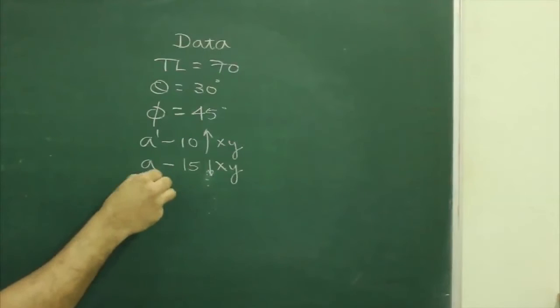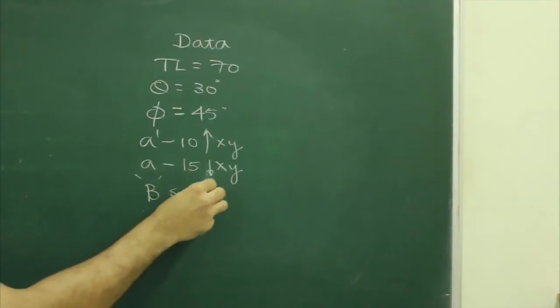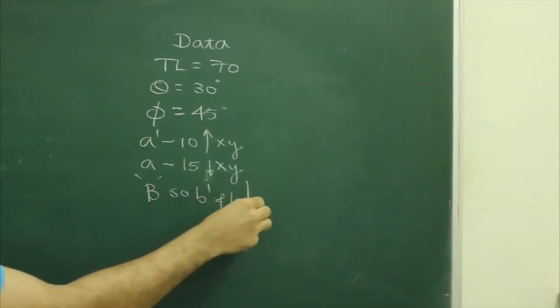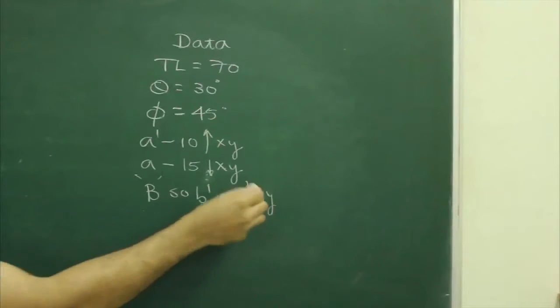In the fourth quadrant, so b dash and b both will be below xy line.